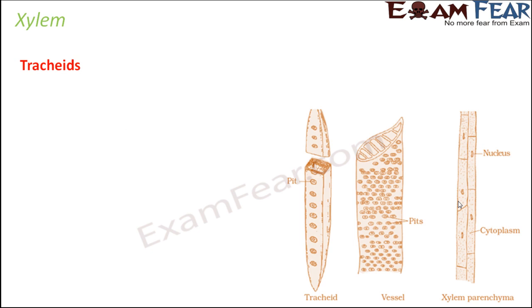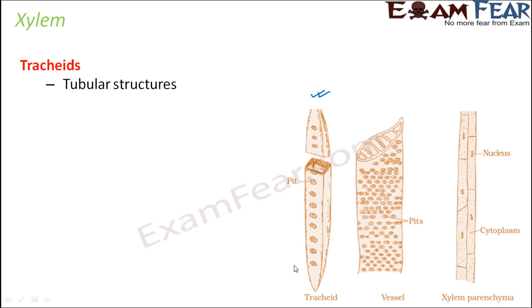All of these tracheids are tubular structures, which is very clear from this diagram. A small tip: since in biology we talk about so many different things — morphology, anatomy, so many different structures and new names — it becomes very difficult to remember the characteristics of each part of a plant. It is always good to have the picture in mind.